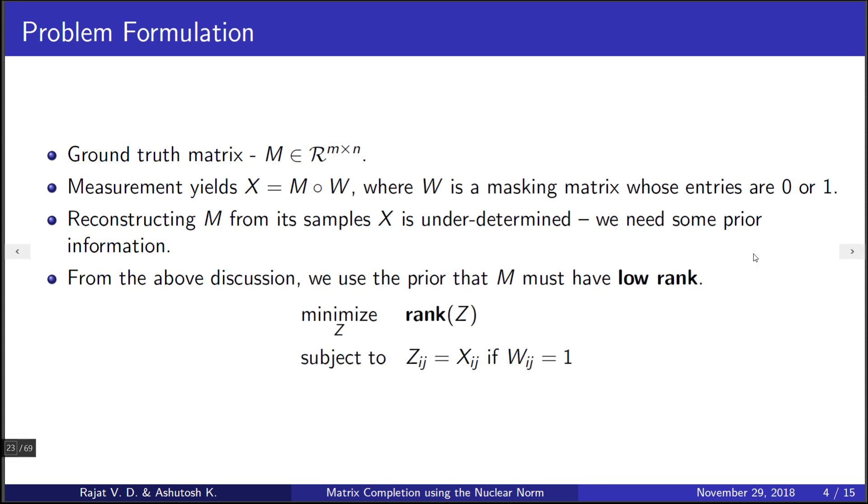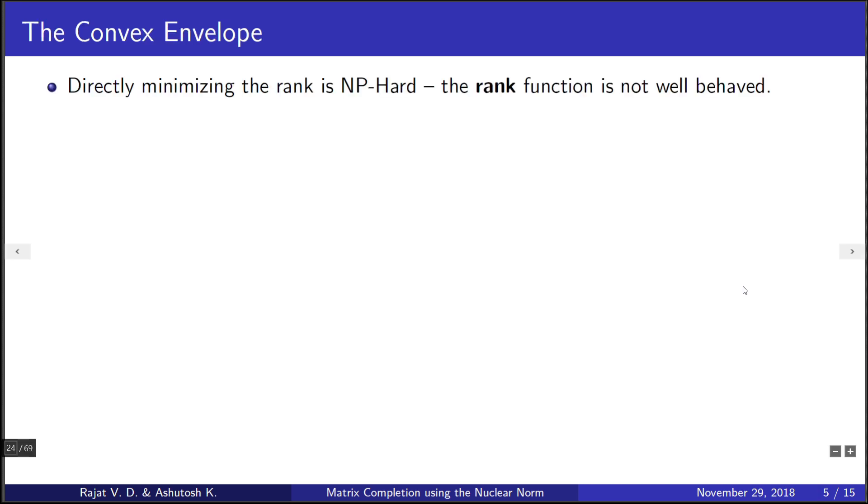Our problem at hand is to find a matrix Z which agrees with our samples X and is of minimum rank. Directly minimizing the rank is an NP-hard problem as the rank function of our matrix has various local minima. Instead, we try to minimize its convex envelope. It turns out that the convex envelope of the rank is the nuclear norm, which is the sum of the singular values of X.